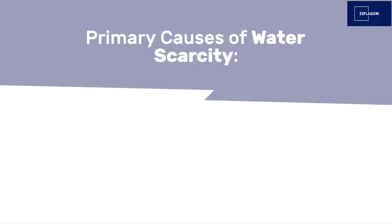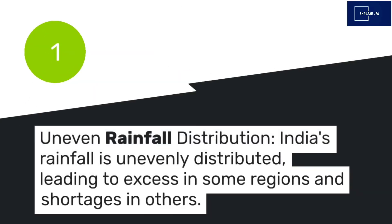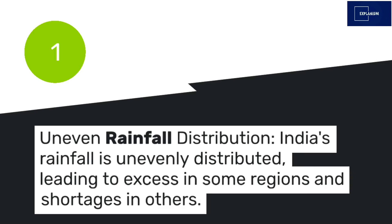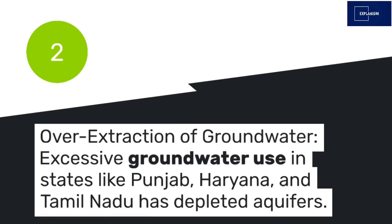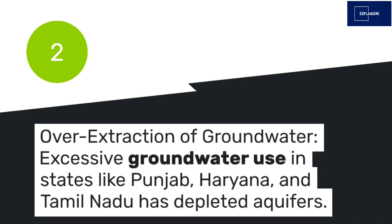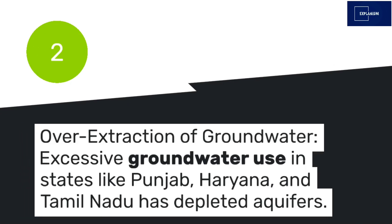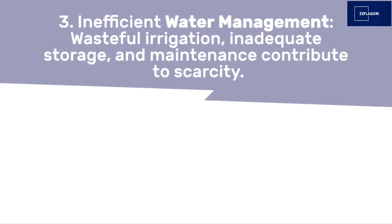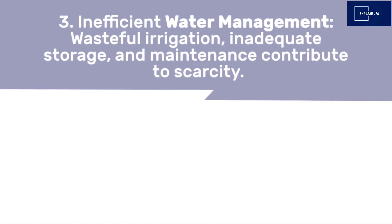Primary causes of water scarcity: 1. Uneven Rainfall Distribution — India's rainfall is unevenly distributed, leading to excess in some regions and shortages in others. 2. Overextraction of Groundwater — excessive groundwater use in states like Punjab, Haryana, and Tamil Nadu has depleted aquifers.